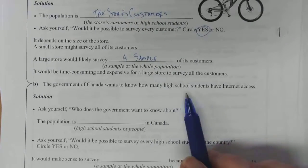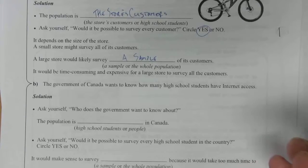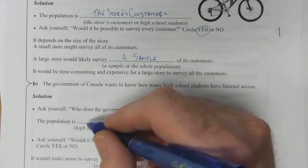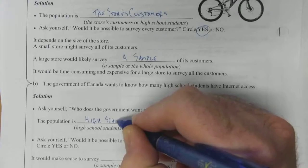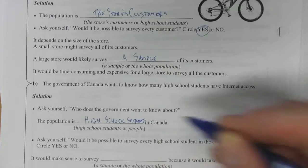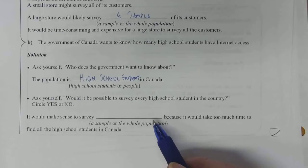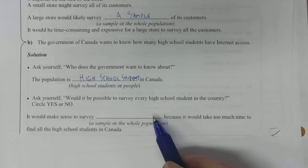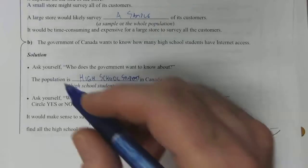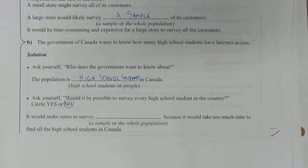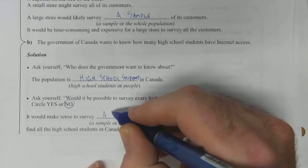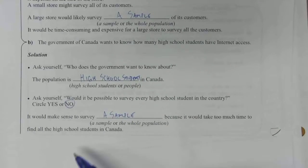Part B: the Government of Canada wants to know how many high school students have internet access. First, ask yourself who does the government want to know about — it's high school students. So the population for this scenario is the high school students. They're not curious about everybody's internet access; they're focusing specifically on high school students within Canada. Would it be possible to survey every high school student in the country? That's a lot of students — it would be tricky to deal with logistically. I don't know how many schools there are in Edmonton alone, so when you expand that across the country, that's a lot of high school students. It's really not reasonable to reach all of those students, so it would make sense to survey a sample, because it would take too much time to find all of those high school students in Canada.